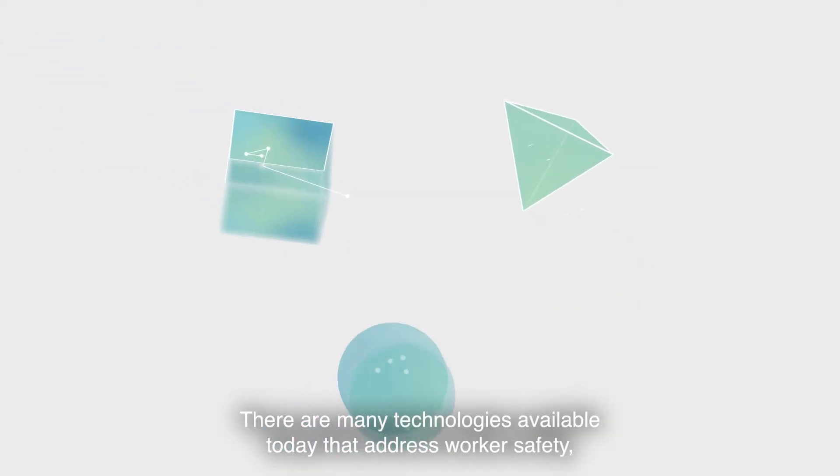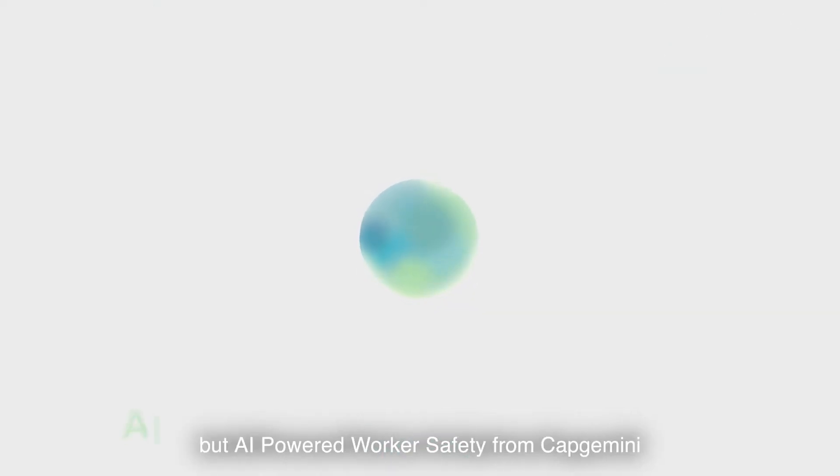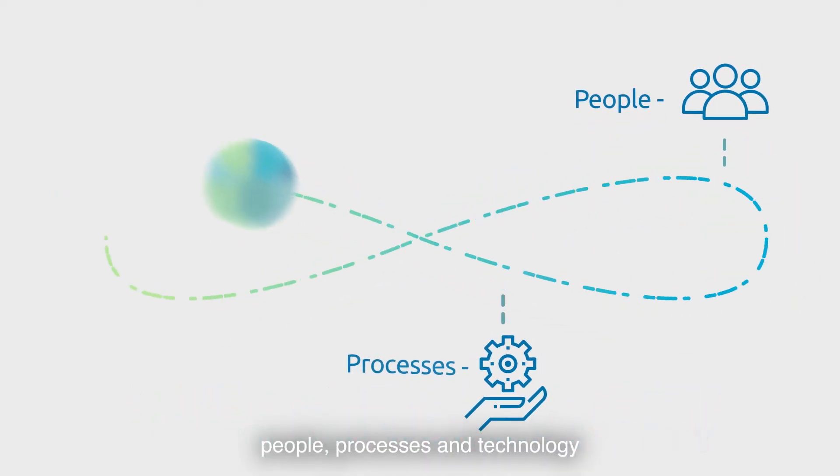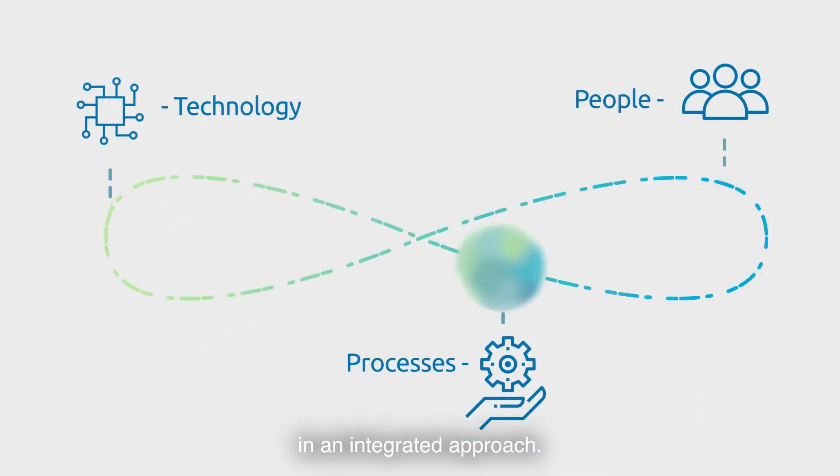There are many technologies available today that address worker safety, but AI-powered worker safety from Capgemini is the only solution that brings together people, processes and technology in an integrated approach.